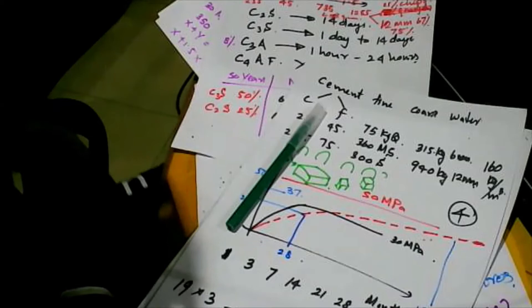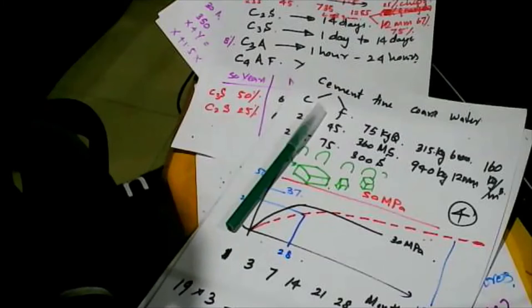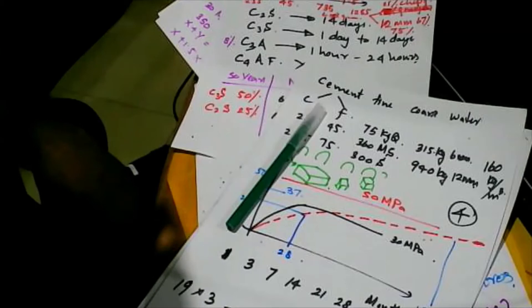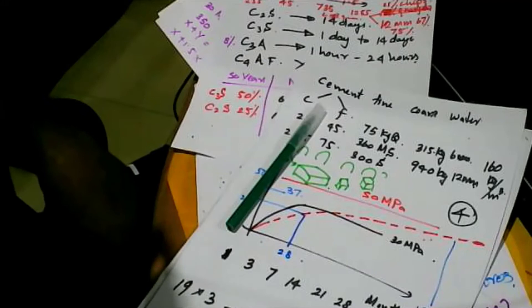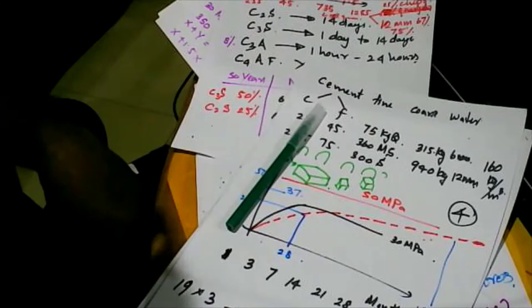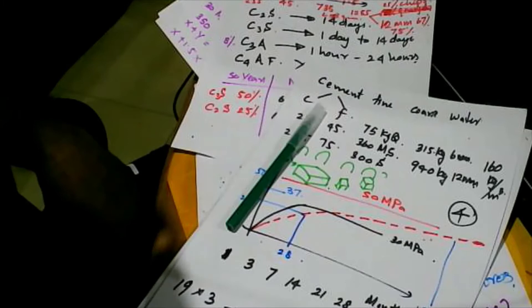After casting, precast components are numbered the next day and stacked so they can be retrieved and placed at the correct position without confusion. This is based on Toyota lean manufacturing principles — managing data so site operations become simple and efficient.